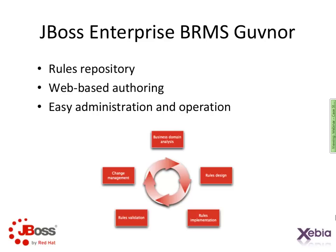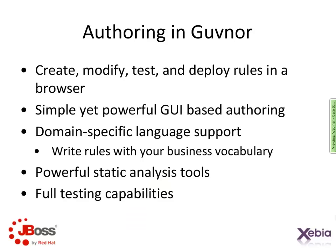The JBoss Enterprise BRMS Governor functions as a full-featured rule repository for the enterprise, serving as a single point of entry for rule authoring, audit, administration, and deployment. Governor provides powerful tools to allow both business analysts and developers to create, modify, and test rules. It includes a guided editor for building rules and creating test scenarios, as well as the ability to add your own business vocabulary using domain-specific language. There are even powerful static analysis tools that can warn you if you're missing rules for certain value ranges — for example, if you have rules for ages 18 to 30 and 45 and over, but nothing for 30 to 45.